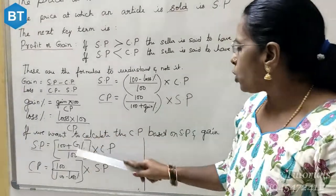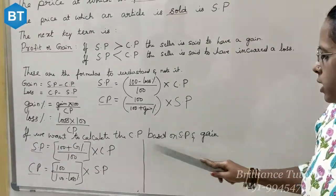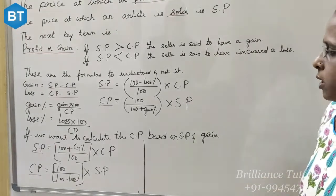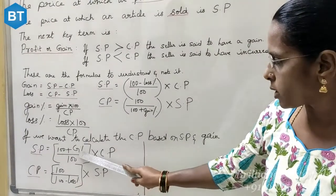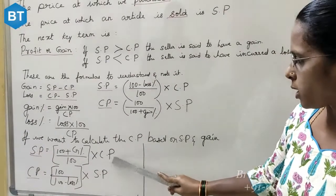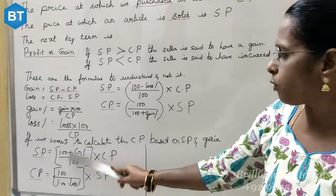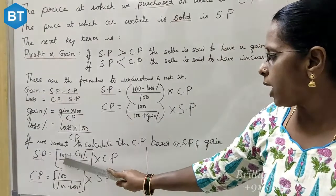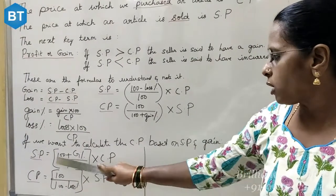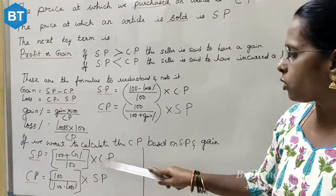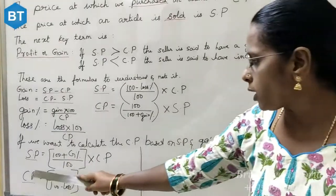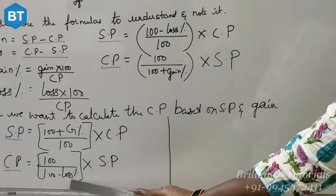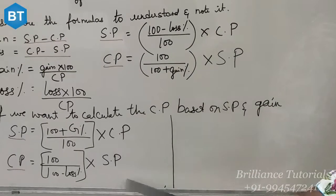Next, if you want to calculate the selling price based on the gain percentage and the cost price, selling price is equal to 100 plus gain percentage, divided by 100, into cost price. Similarly, when they ask you to find the cost price, it is 100 divided by 100 minus loss percentage, into SP.